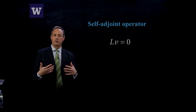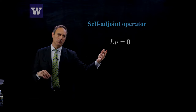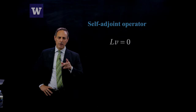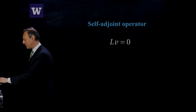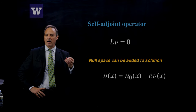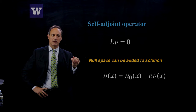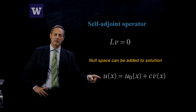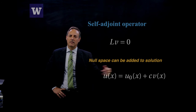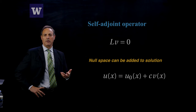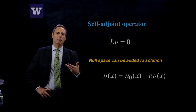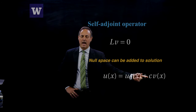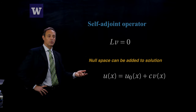Let's start off with just thinking about self-adjoint operators. Normally you would think about the null space of the adjoint problem, but if it's self-adjoint, it's just looking at the operator itself and its null space, LV equals zero. We're going to assume that V is non-trivial — that I can actually find a non-trivial solution to LV equals zero. If I try to write down a solution to LU equals F, my solution is some solution U0, but I can always add some constant times the null space, and that's still a solution. I have an infinite number of solutions due to the existence of a non-trivial null space.